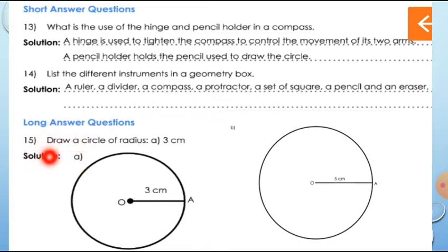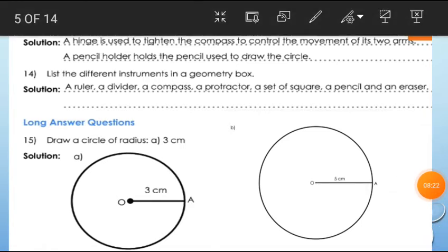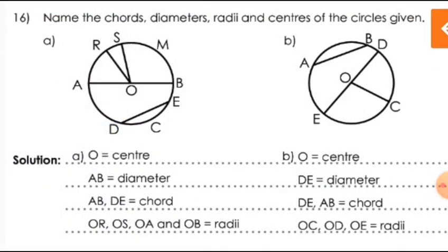Now the next question: Draw a circle of radius 3 cm and 5 cm. This is the 15th question — I know everyone did it. Now question 16: Name the chords, diameter, radii, and center of the circles given. My dear children, it is a very important question. In exams also, this type of question can be asked — the figure will be given and you have to identify the center, diameter, chord, and radii.